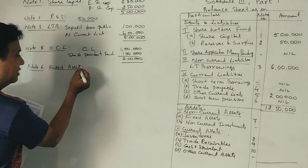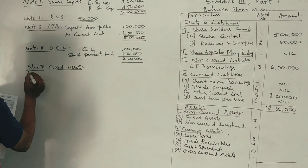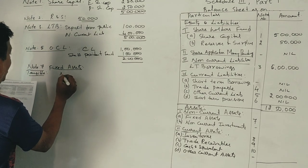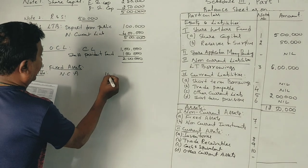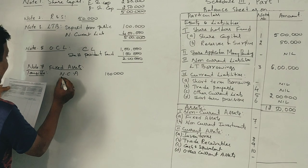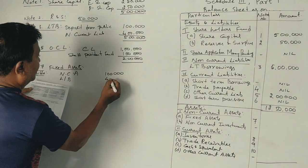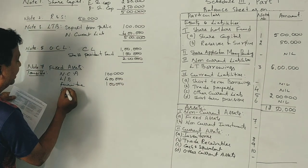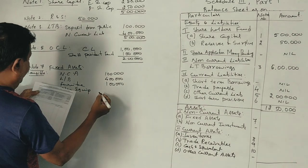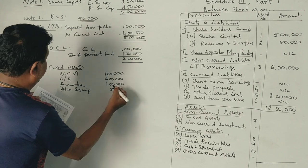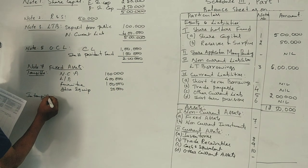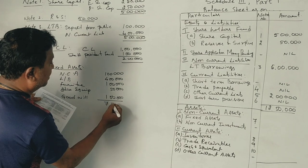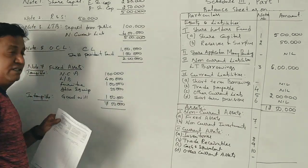Note number 7 covers tangible fixed assets, which are non-current assets: land and buildings ₹4 lakhs, furniture ₹1 lakh, office equipment ₹50,000. For intangible assets, goodwill is ₹1 lakh. The total comes to approximately ₹7,53,000.